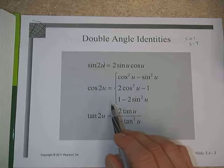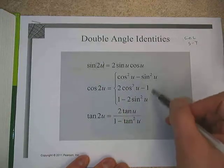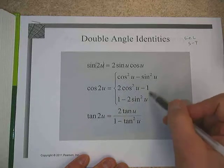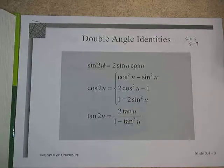In this case, u, it doesn't really matter what variable we deal with. But when we have the cosine of a double angle, we have three different formulas that we can work with, and it's kind of up to us which one we choose to use. And then finally tangent is going to be equal to 2 tangent u over 1 minus tangent squared u.